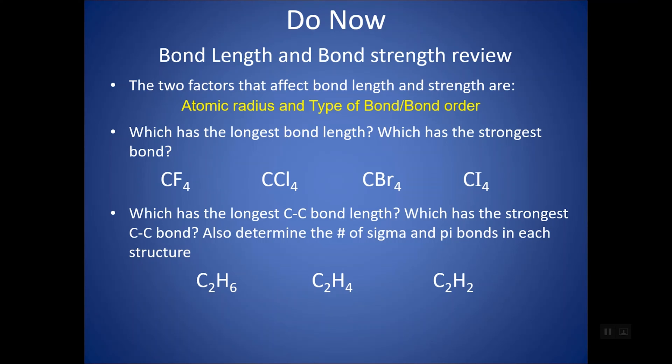When I say type of bond, that means single, double, triple, or you can think of it as bond order. Is it one if it's single, two if it's double, or 1.5 if there's resonance? All of these factors are going to affect bond length and bond strength.